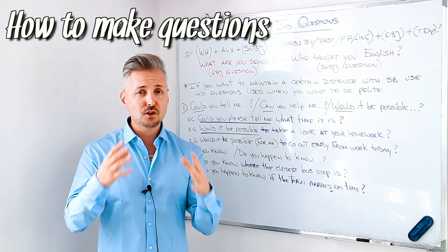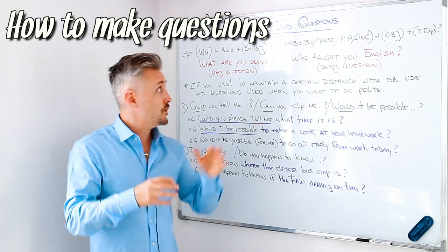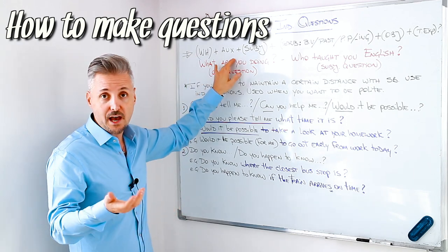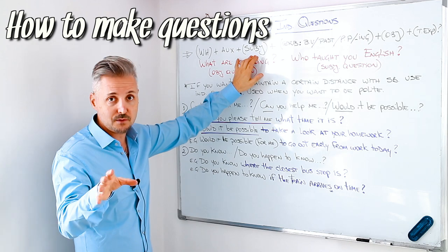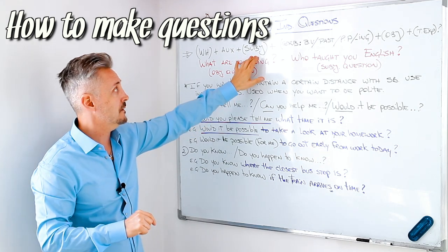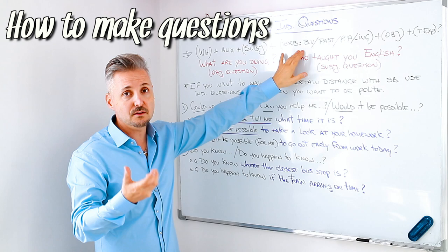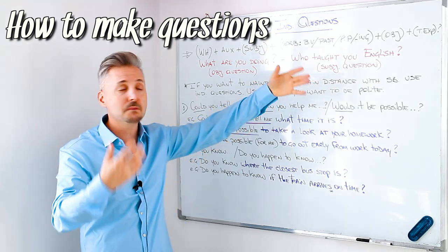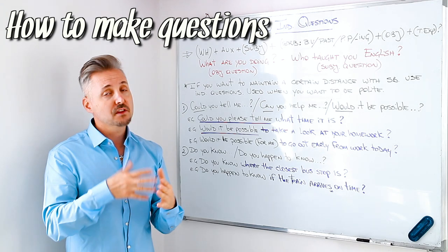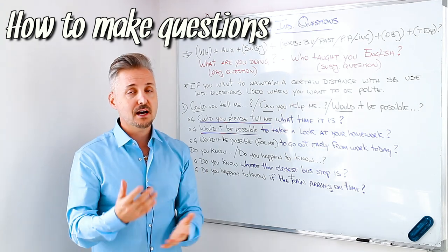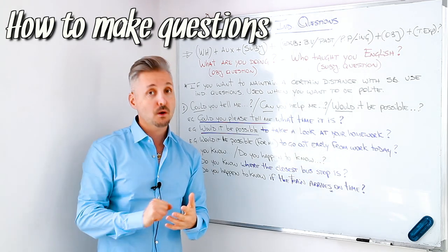We have WH question words like who, how, where, when — that goes first. Then we have the auxiliary, then the subject sometimes. Then the verb. The verb could be the base form of the verb, past, or past participle. And then we have the object, maybe, or a time expression at the end of the question.